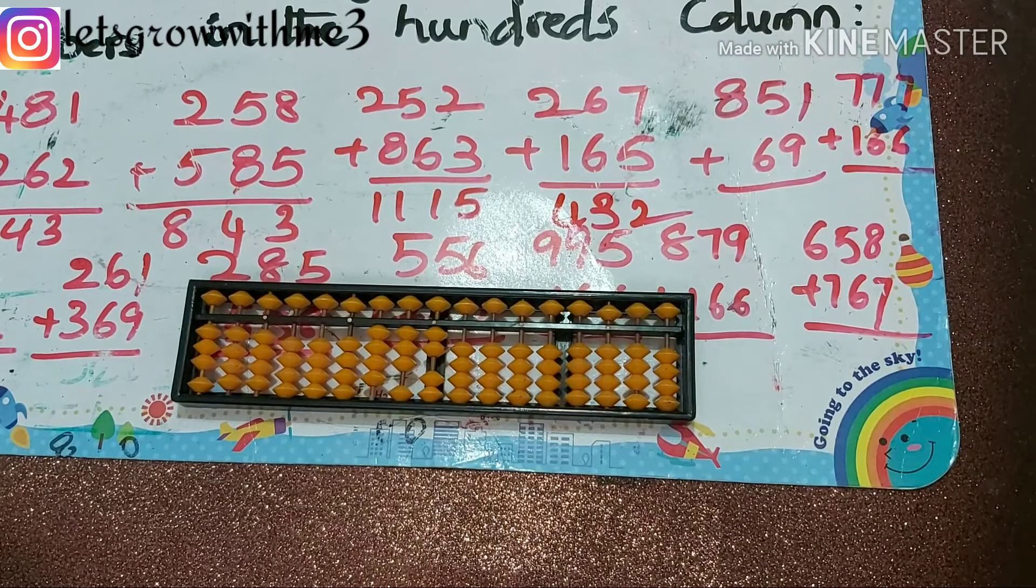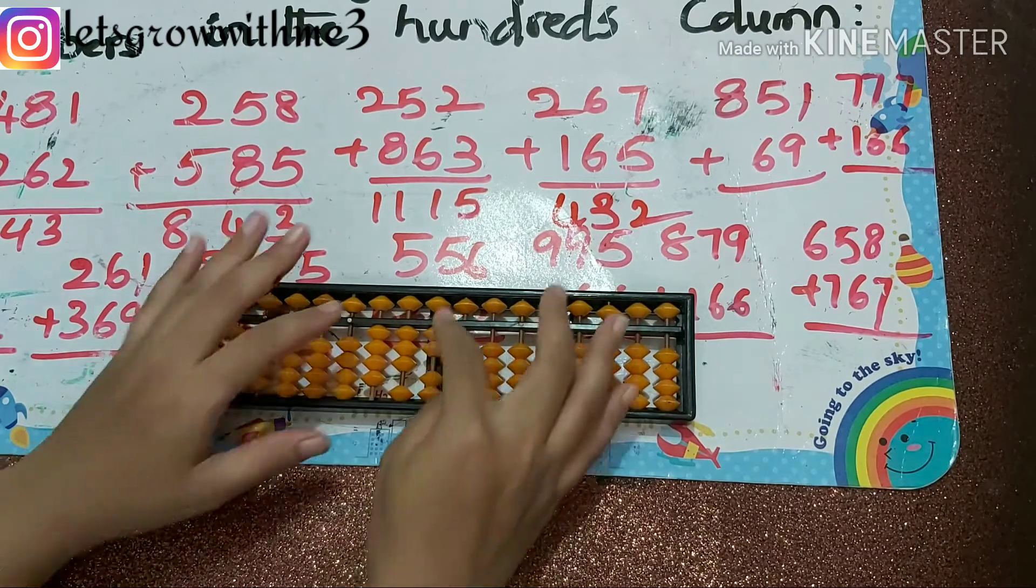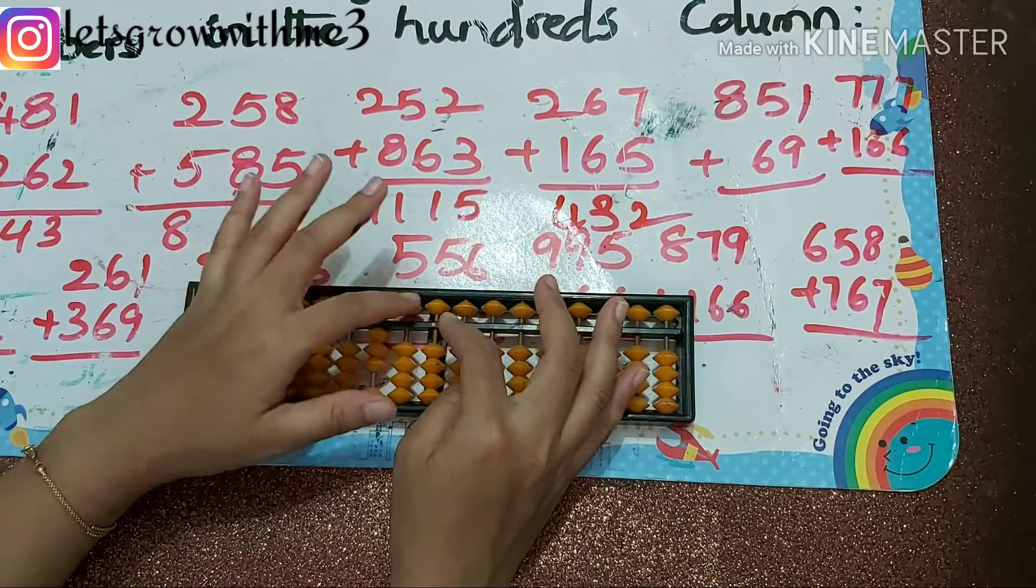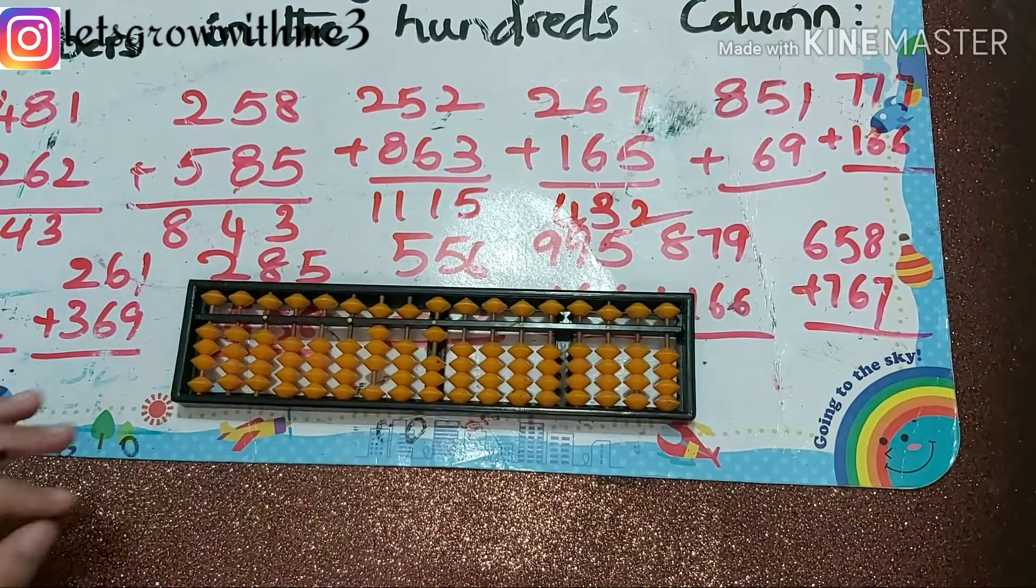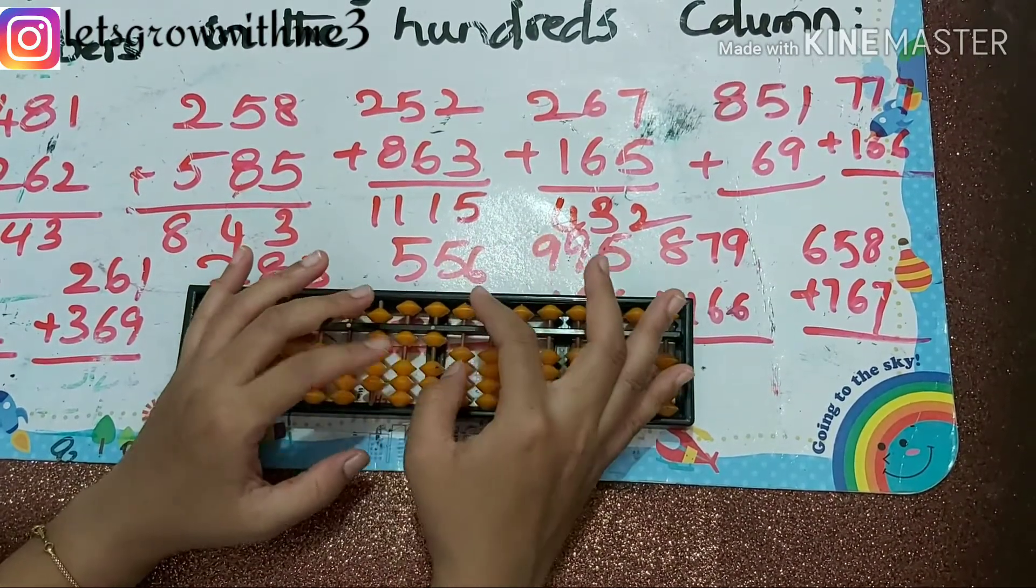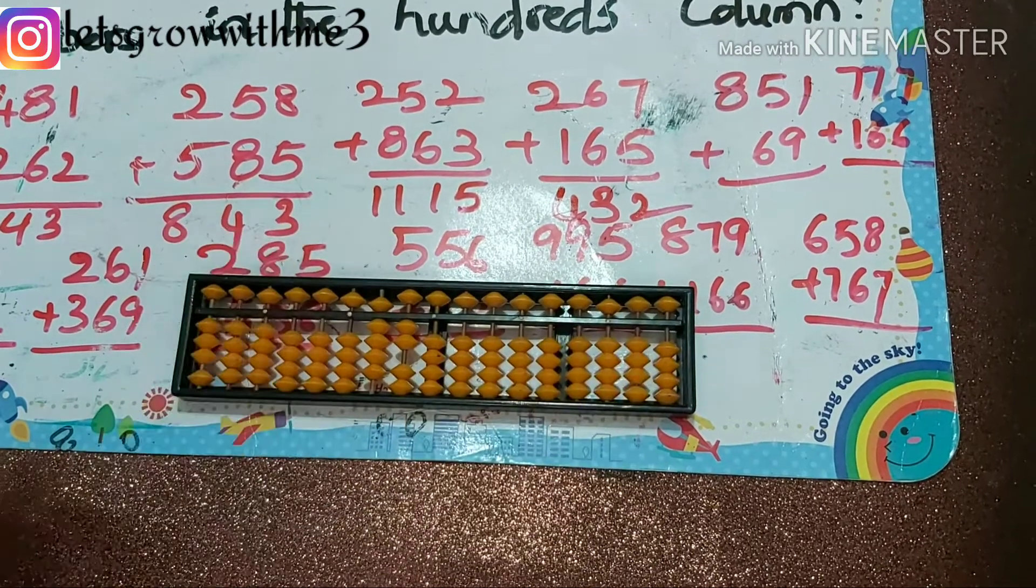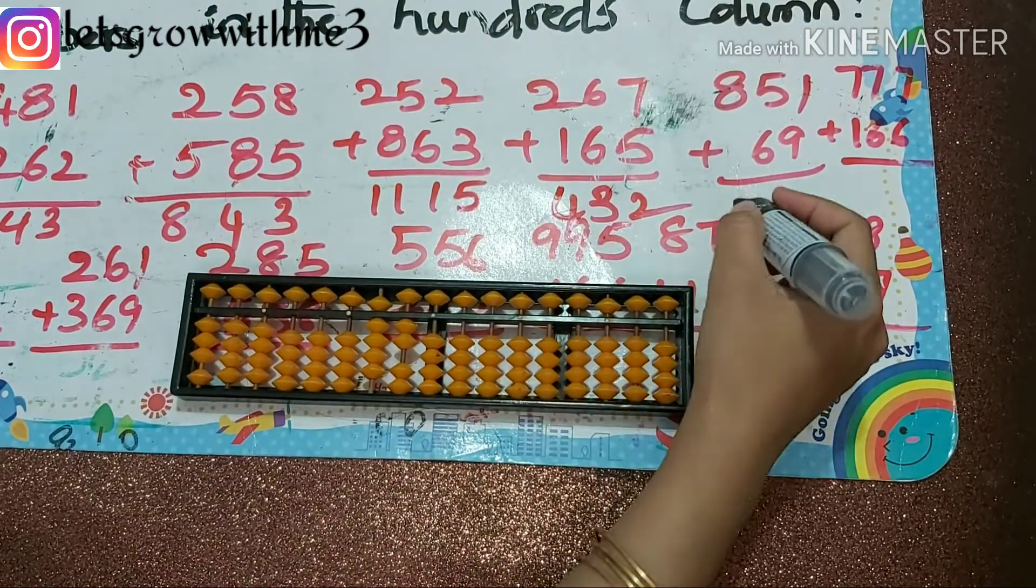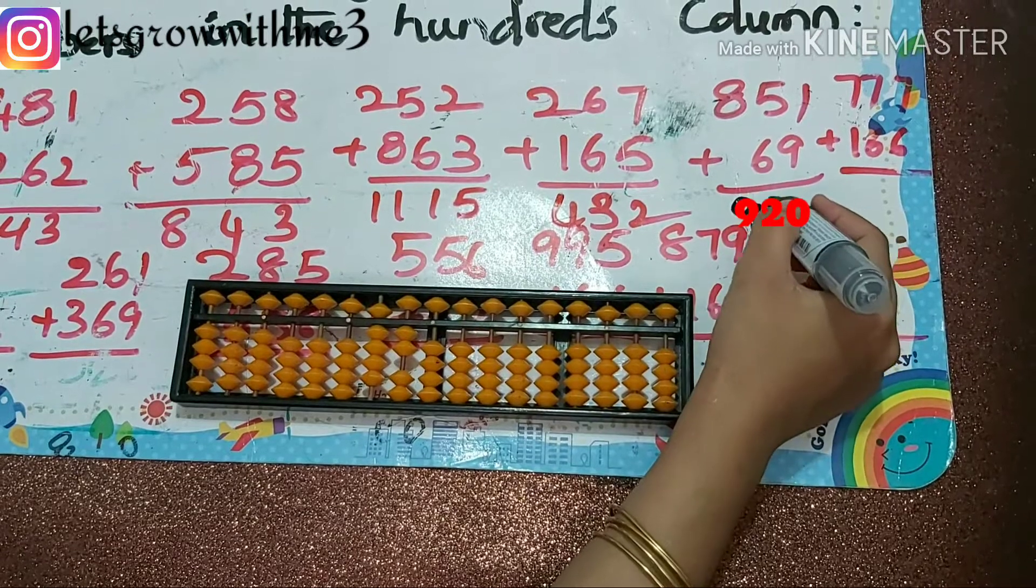Next one: 851 plus 69. So papa up, mama up, babies up. Plus 9, plus 10 minus 1. So answer is 920.